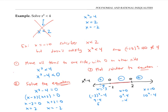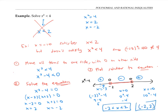The negative region is the middle interval, not including the endpoints, because the endpoints are where x squared minus four equals zero and I want it strictly less than zero. I can write my answer as the inequality negative two is less than x is less than two, or in interval notation as the open interval from negative two to two.